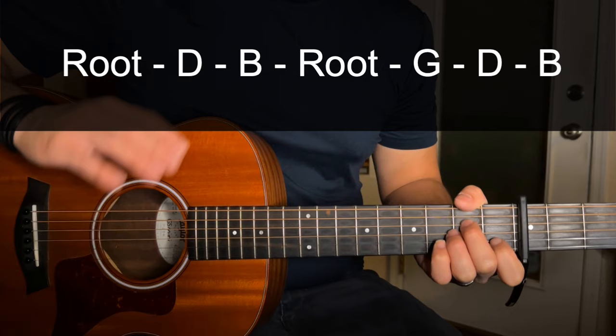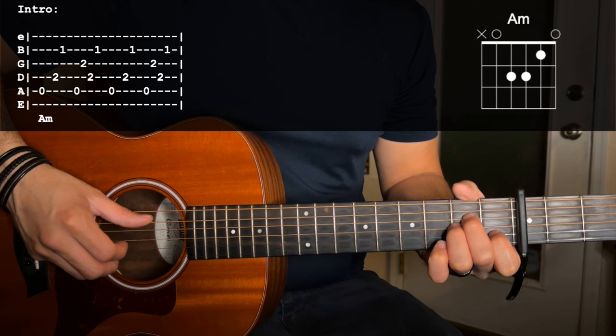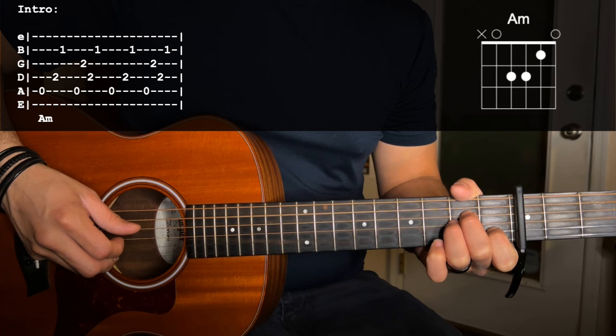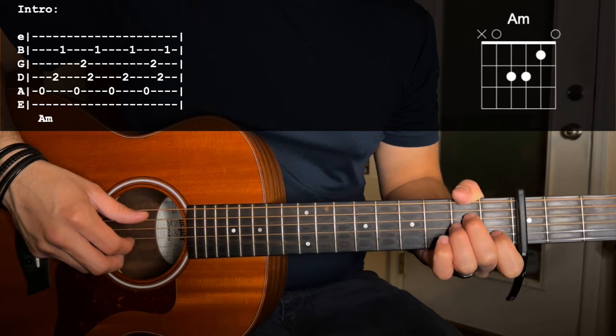So for that A minor, the root note is going to be an open A string, then we're going to go D, B. Then you're going to go root note, G, D, B. And you're just going to put those two together.